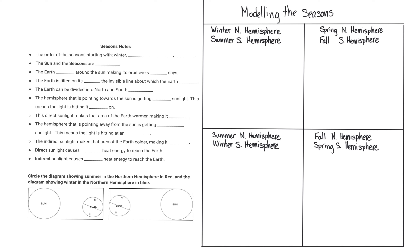Have in each of the quadrants: Winter, Northern Hemisphere; Summer, Southern Hemisphere; Spring, Northern Hemisphere; Fall, Southern Hemisphere; Summer, Northern Hemisphere; Winter, Southern Hemisphere; Fall, Northern Hemisphere; and Spring, Southern Hemisphere. Go ahead and pause this, set up your notebook, and then resume once you have it all ready to go.